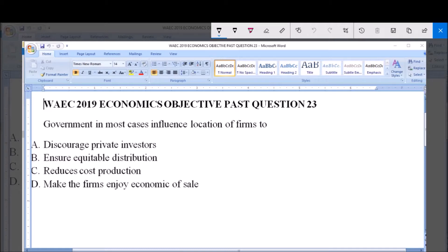Governments in most cases influence location of firms to: A. Discourage private investors, B. Ensure equitable distribution, C. Reduce cost production, D. Make the firms enjoy economies of scale.